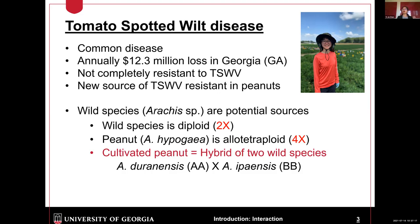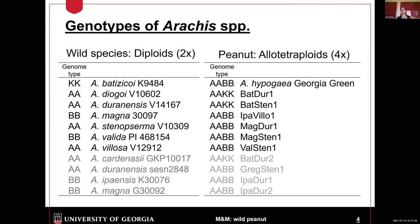Wild species are the potential resource because they harbor many good genes. Wild species are diploid and peanut is an allotetraploid, but breeders have already overcome this situation. Samuel had a nice introduction about allotetraploidy in his talk. I'm so thankful for the breeders because of that I have so many materials for testing.